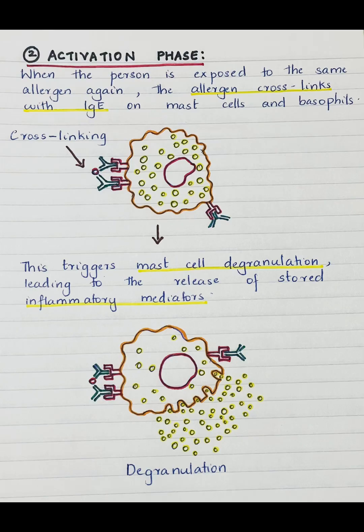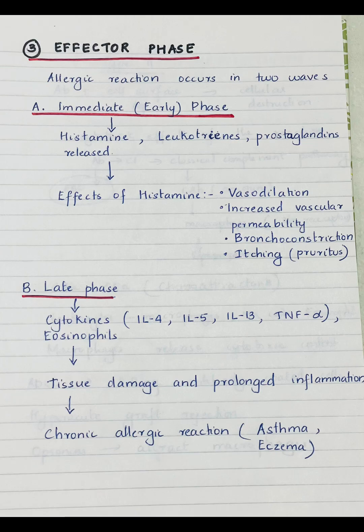The second phase is the activation phase. In the activation phase, the person is exposed to the same allergen again. When re-exposure occurs, the allergen cross-links with IgE on mast cells and basophils. This cross-linking causes the mast cell to degranulate, leading to the release of stored inflammatory mediators.